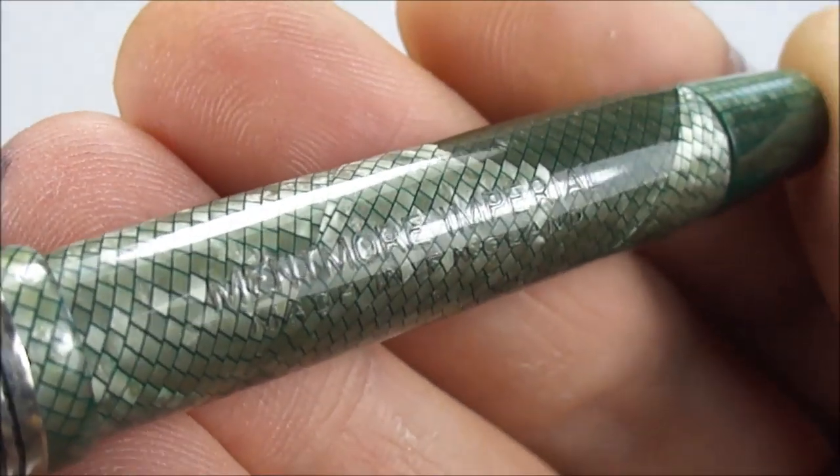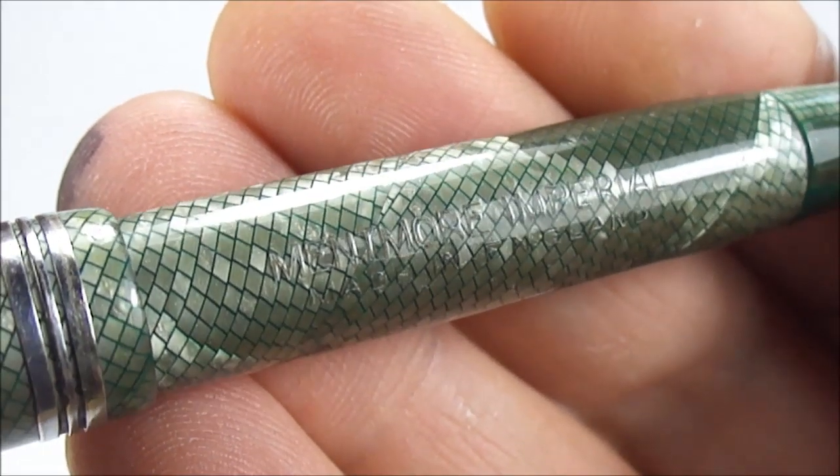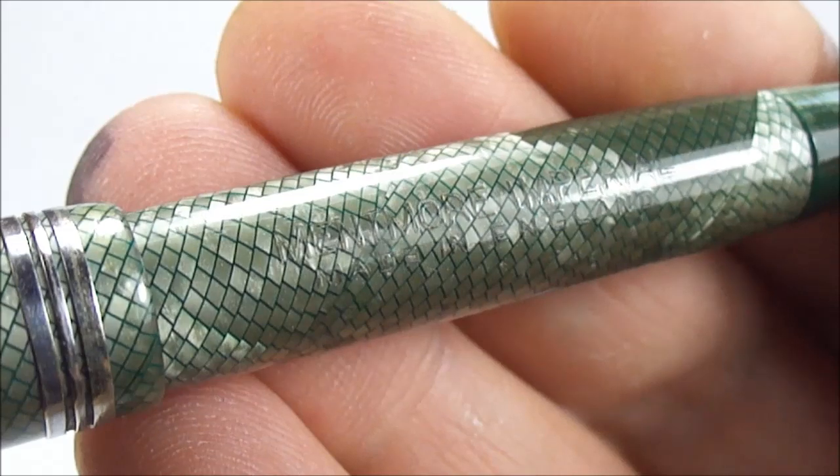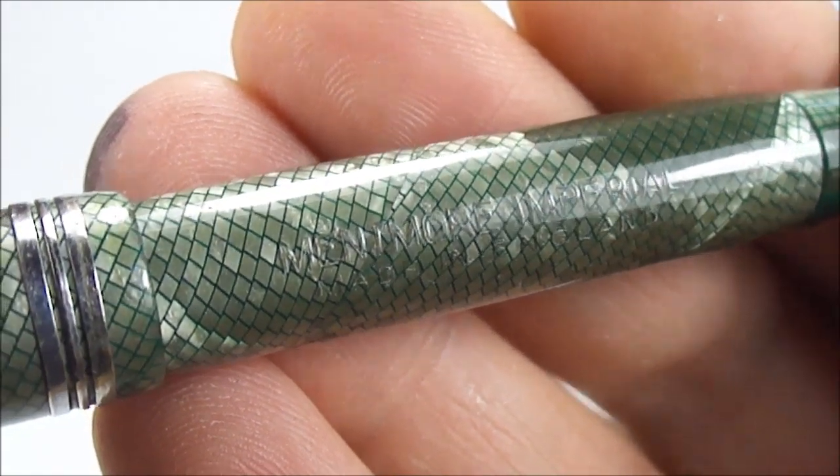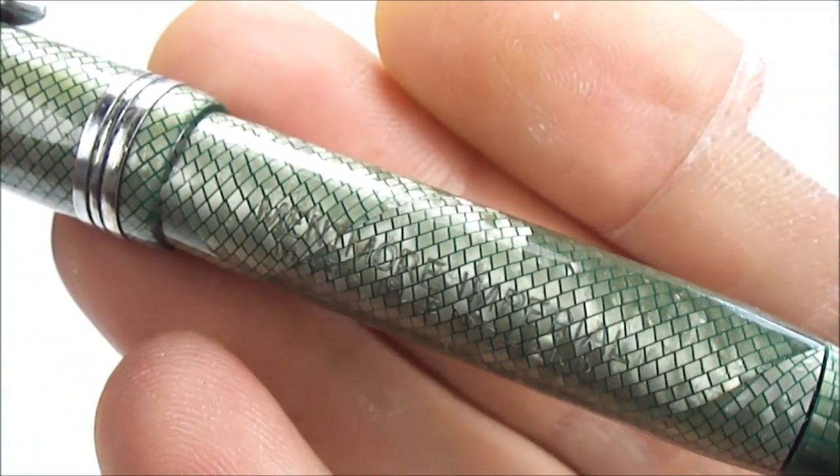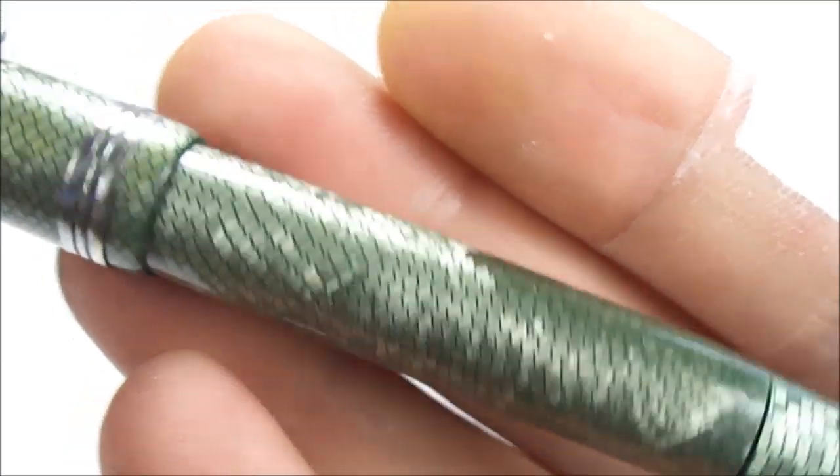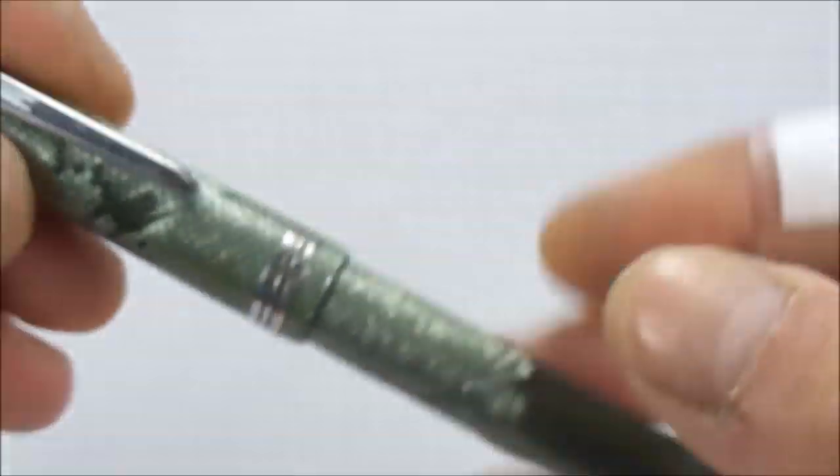You can see there the imprint is nice and clear. It says Mentmore Imperial, and then underneath it, Made in England. And also you can see there the pattern - absolutely lovely, this lovely green snakeskin pattern.